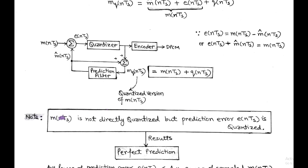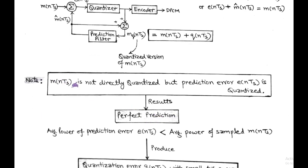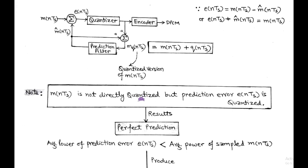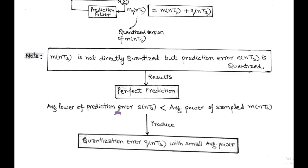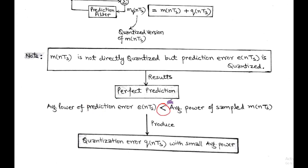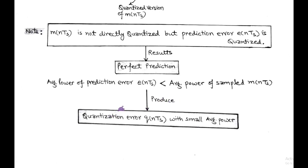We note an important point: for perfect prediction, the sampled signal M(NTS) is not directly quantized, but the comparator output — the prediction error — is quantized. Also, the average power of E(NTS), the prediction error, is less than the average power of the sampled signal M(NTS), and this produces a quantization error Q(NTS) with small average power.